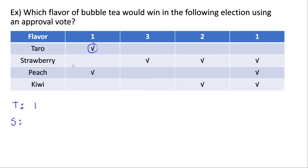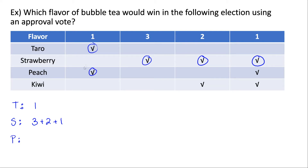Moving to strawberry, we have three voters that approve, two voters that approve, and one voter that approves — so those three groups all give their votes to strawberry. For peach, this one voter also approved of peach. Tarot and peach were the two flavors they liked, so that's who they decided to approve of, giving peach one vote from them.